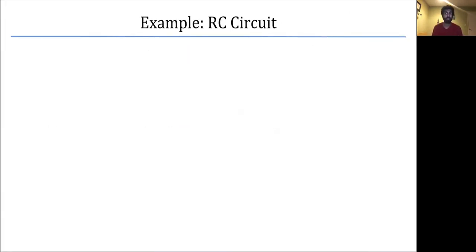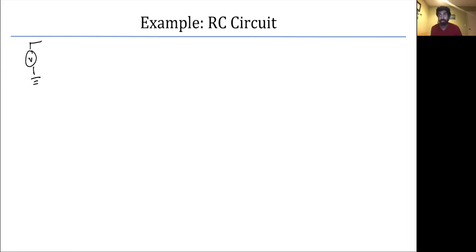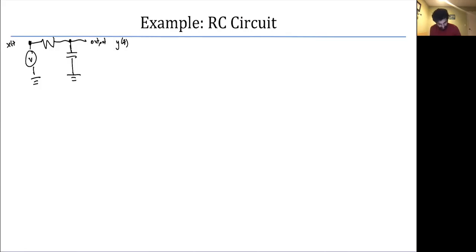Let's go through a concrete example: an RC circuit. We have a ground, a voltage source V, a resistor, an output terminal, and a capacitor to ground. The output is Y of t and the input X of t is taken at the input terminal. From Ohm's law, X minus Y equals the current times the resistance.